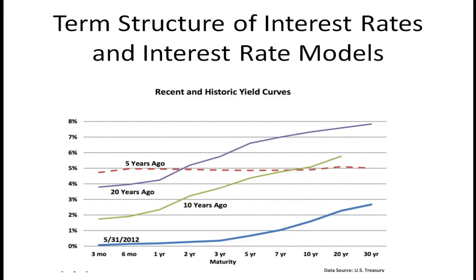In previous videos we discussed the term structure of interest rates, which is a way to understand the yield curve. The yield curve is a plot of maturity against yield to maturity. We'd like to understand why the yield curve has the shape it does — for example, why the rate is nearly zero for the three-month Treasury bill on May 31st 2012, yet around two and three-quarter percent for the 30-year bond on that same date.